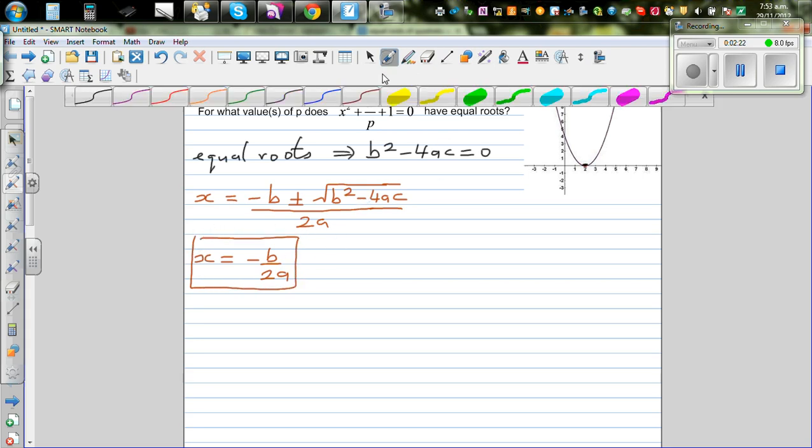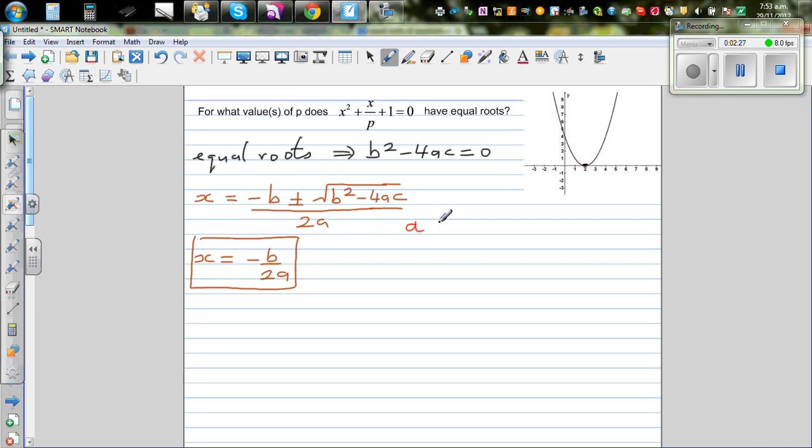Okay, and so now we have to find what is a, b and c. So our a is 1, b is 1 over p, and c is equal to 1.